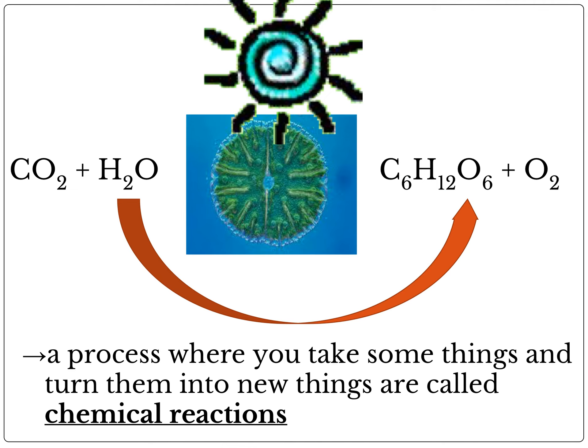In chemistry, a process where you take some things — such as the CO2 and the water — and turn them into a whole new set of things, such as the glucose and the oxygen, whenever that happens, that is called a chemical reaction.